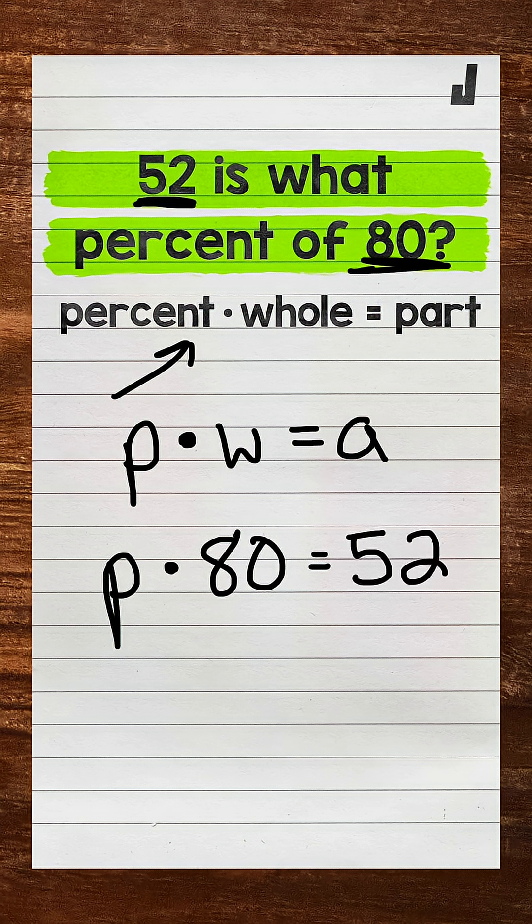Now we have a one-step equation that we need to solve. So we need to isolate that variable of P. P is being multiplied by 80. So we need the inverse operation, the opposite operation. That's division. So divide the left side of the equation by 80.